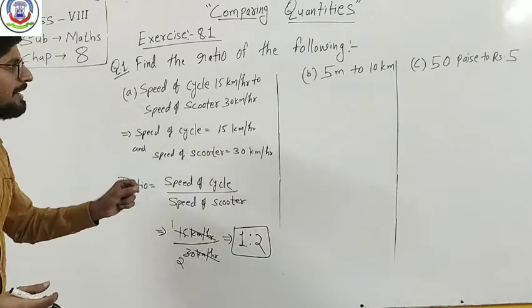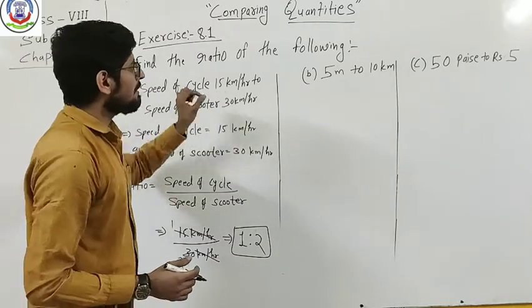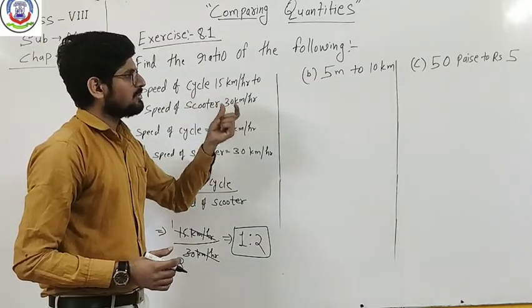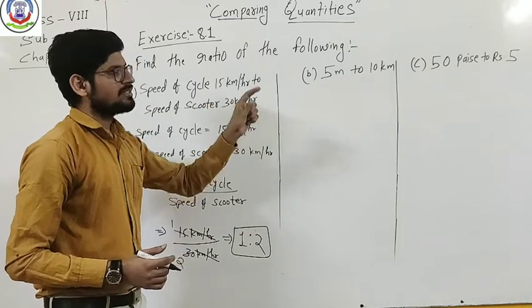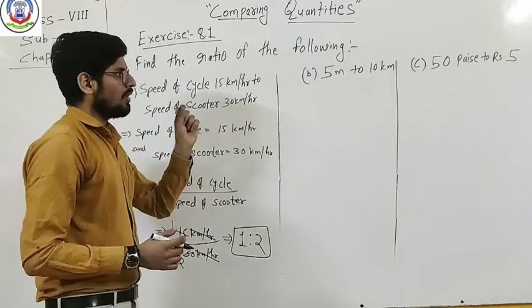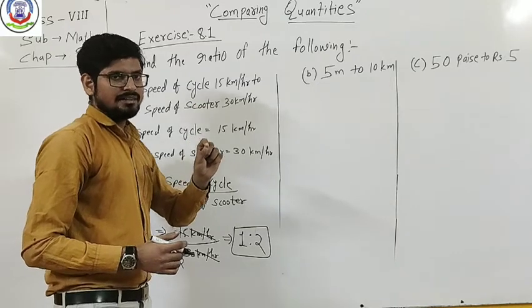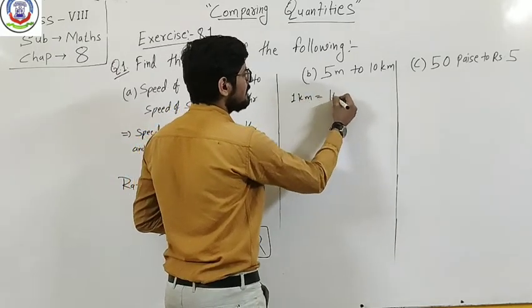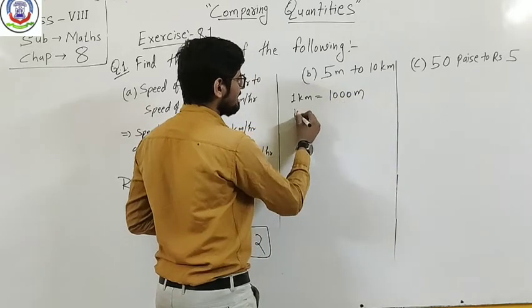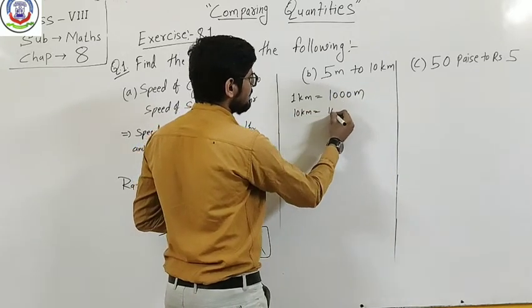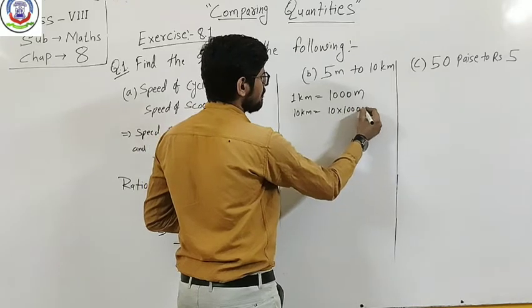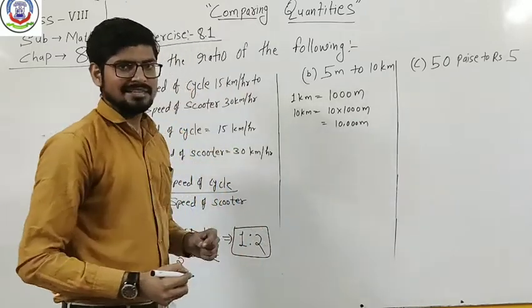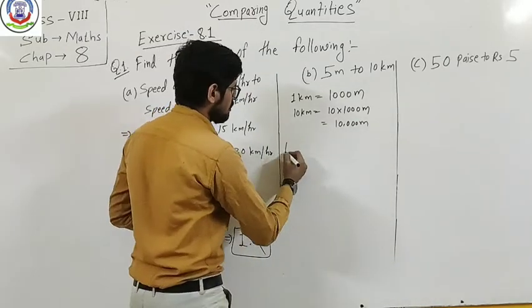Second question is the same, but the difference is: in the first question you had same units given, but in question B you have one quantity in meters and the second one in kilometers. So convert kilometer to meters—that is 1000 meters. In 10 km you will get 10,000 meters.